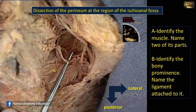This is a dissection of the perineum at the region of the ischioanal fossa, and this is the midline where the anus is located. The region of the ischioonal fossa is bounded medially by the levator ani muscle. The levator ani has several parts: pubococcygeus, the most anterior fibers; iliococcygeus, the middle fibers; and the posterior fibers are called the ischiococcygeus, or sometimes referred to as a separate muscle called coccygeus. At least two parts of the muscle are iliococcygeus and pubococcygeus.